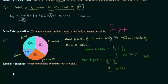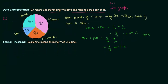Now we will move to logical reasoning, which is the last part of this presentation. Logical reasoning means thinking that is logical. We will try to understand logical reasoning with one example.